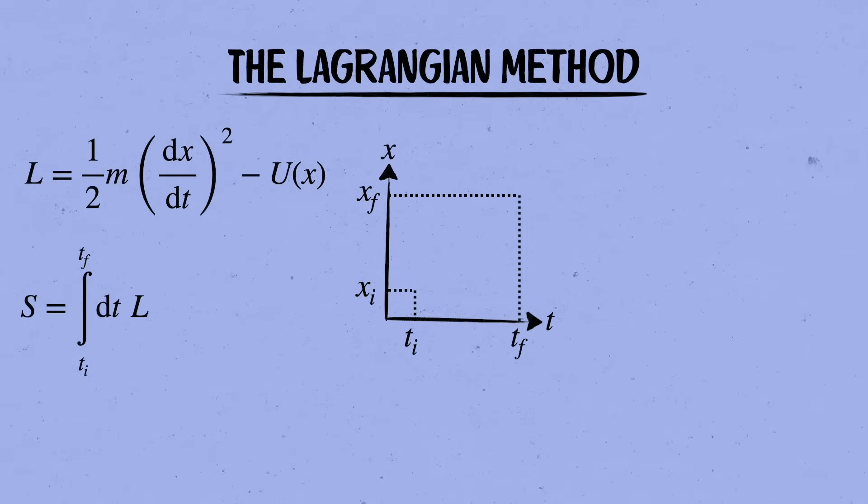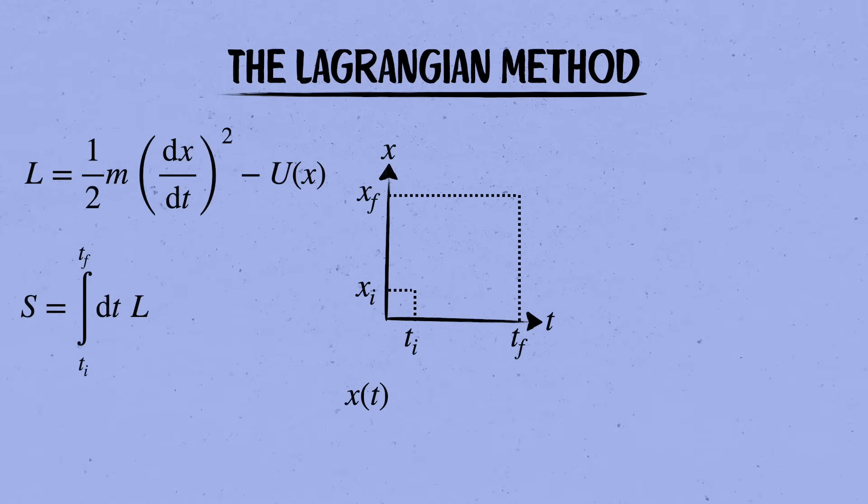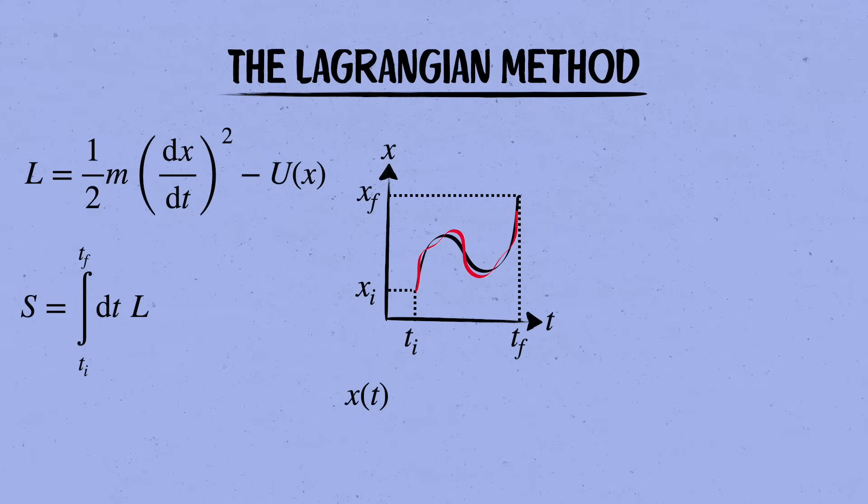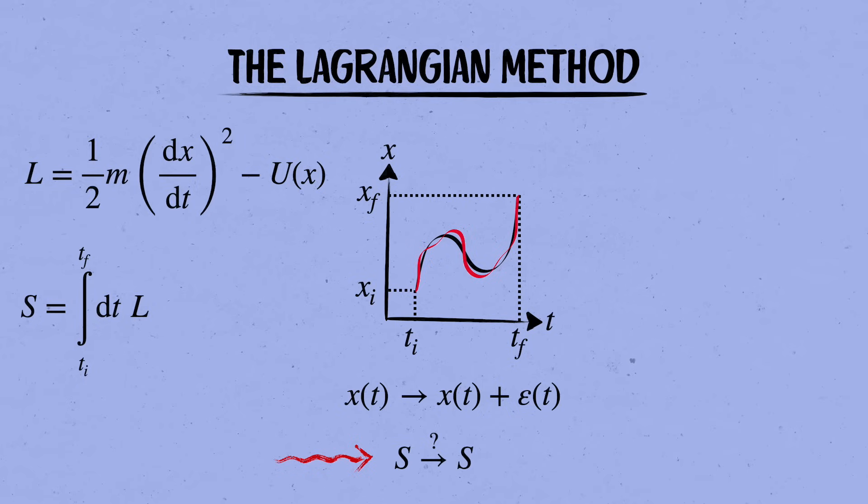It's the same with the action, except that now we want to find the curve x of t for which s is minimized. So maybe we have a guess that the minimum curve looks like this. Then what we want to do is see how the action changes when we make a small variation of the curve by adding some little wiggles to it. Mathematically, we're taking our curve and shifting it by x of t goes to x of t plus epsilon of t, where epsilon is an infinitesimal function that adds the little wiggles. If we indeed start it at a minimum, then the action shouldn't change under this shift.